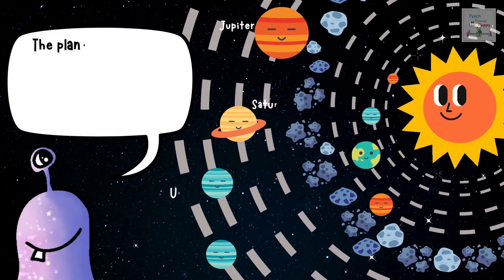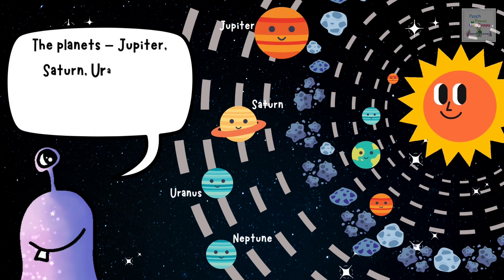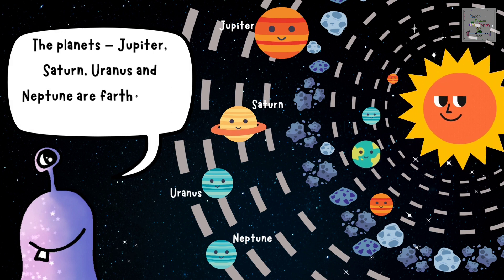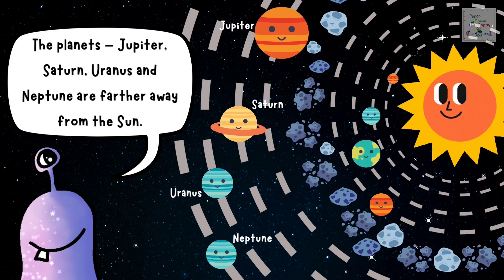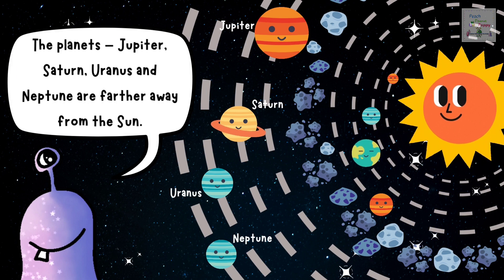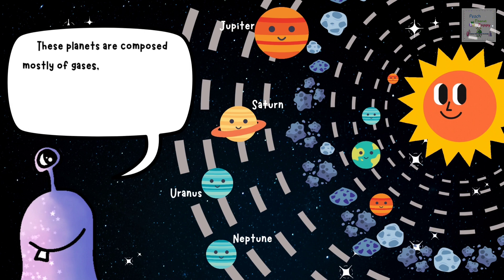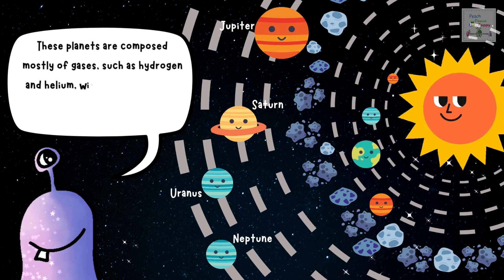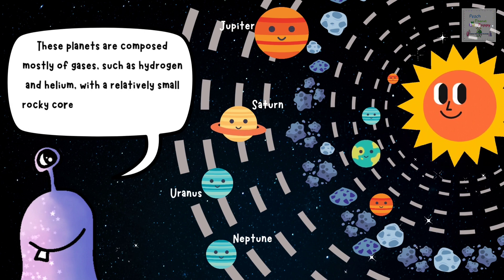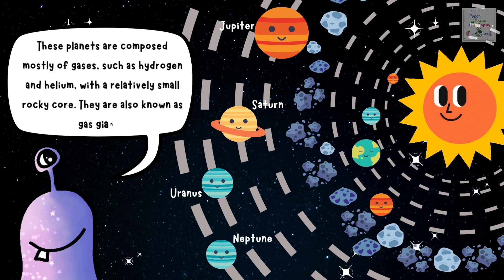Now, let's have a look at the remaining four planets. The planets Jupiter, Saturn, Uranus and Neptune are farther away from the Sun. These planets are composed mostly of gases such as hydrogen and helium with a relatively small rocky core. They are also known as gas giants.